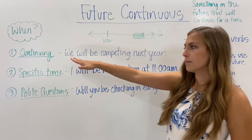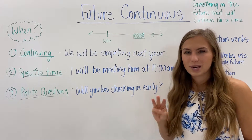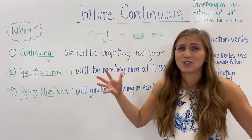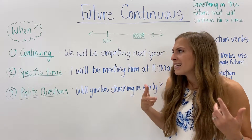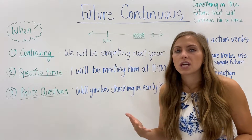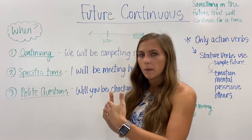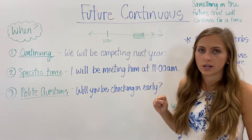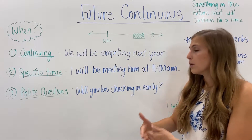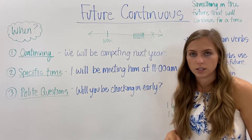So let's look at when and in what situations we use this tense. There are three different cases. Number one: things that are continuing. Anytime we are thinking about actions that will continue — something that happens over a period of time — we will use the future continuous tense. For example, "We will be competing next year" — next year, we will compete over a period of time, so because it's a period of time in the future, we use the future continuous.